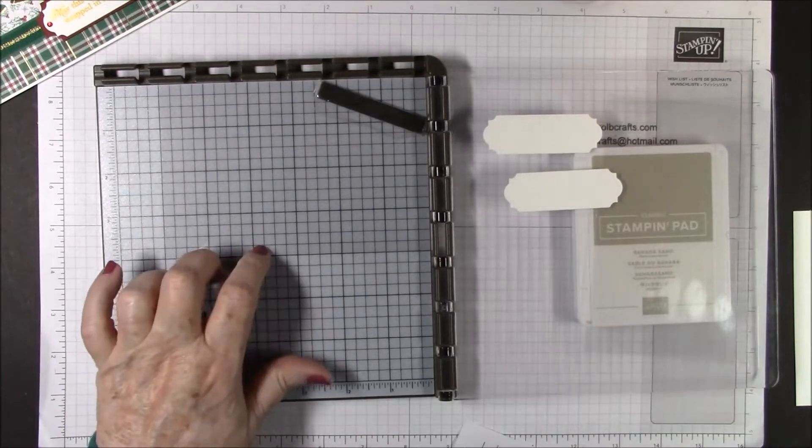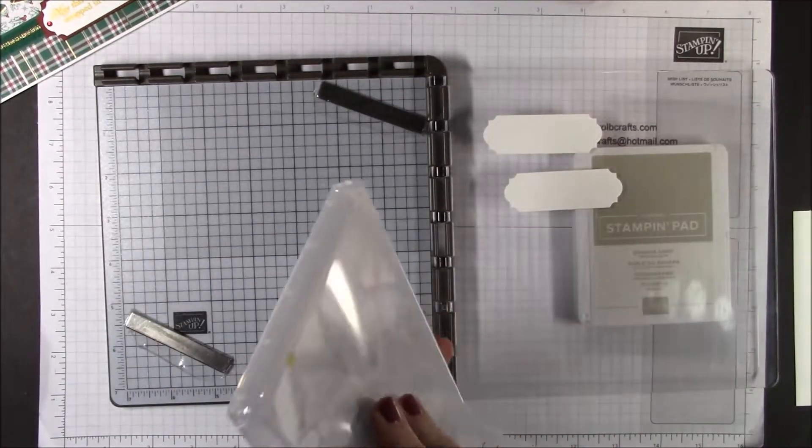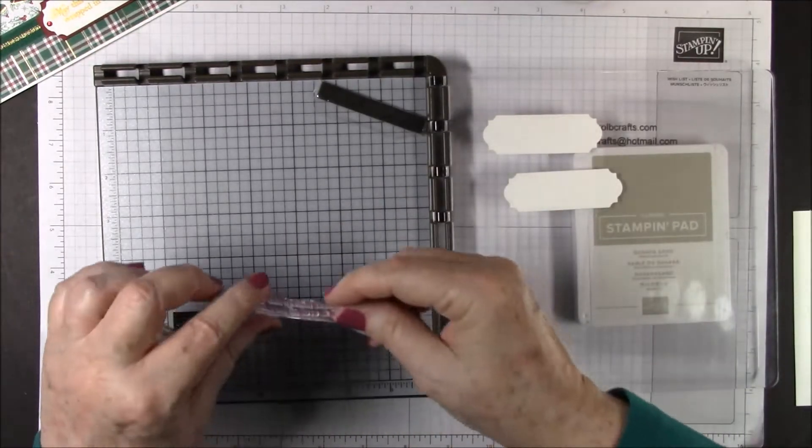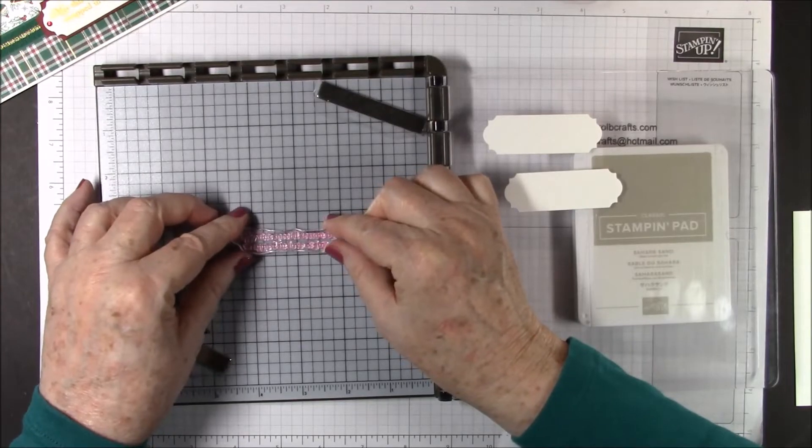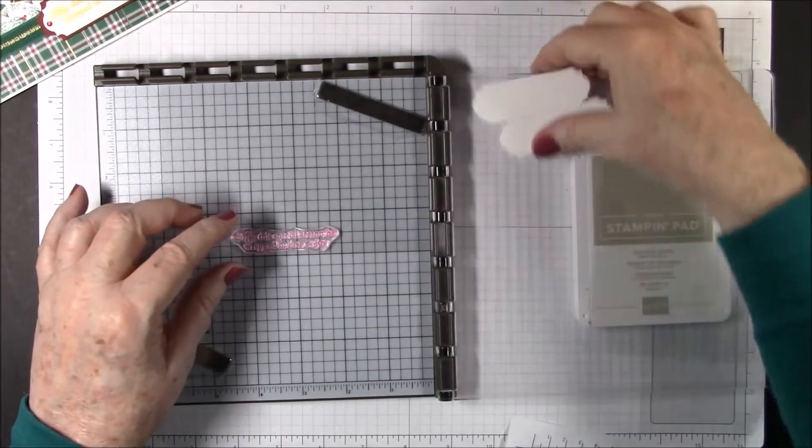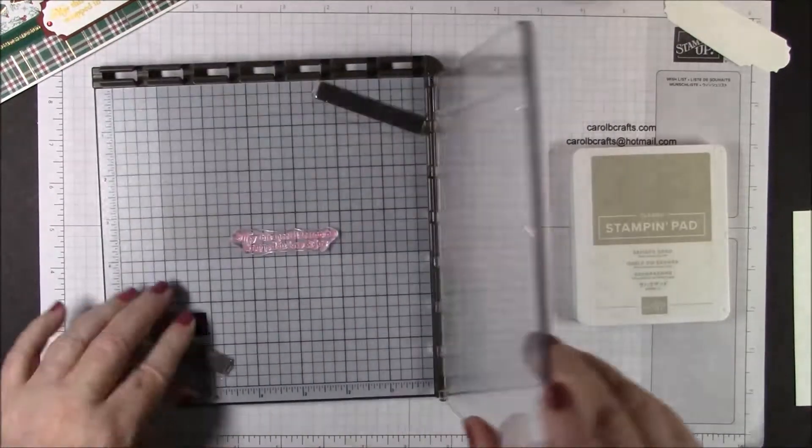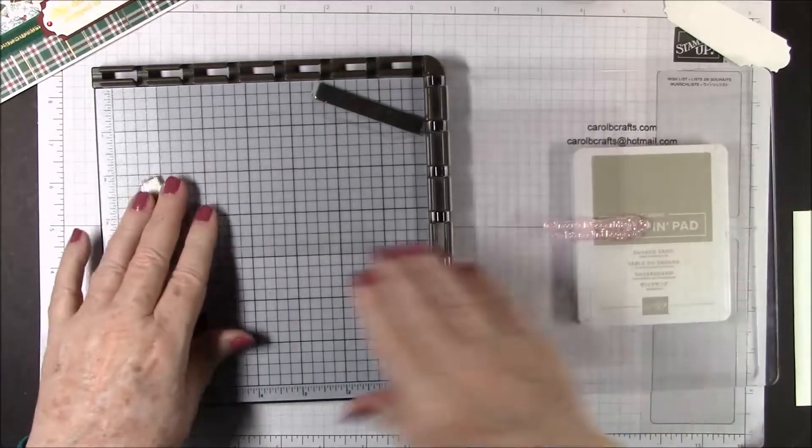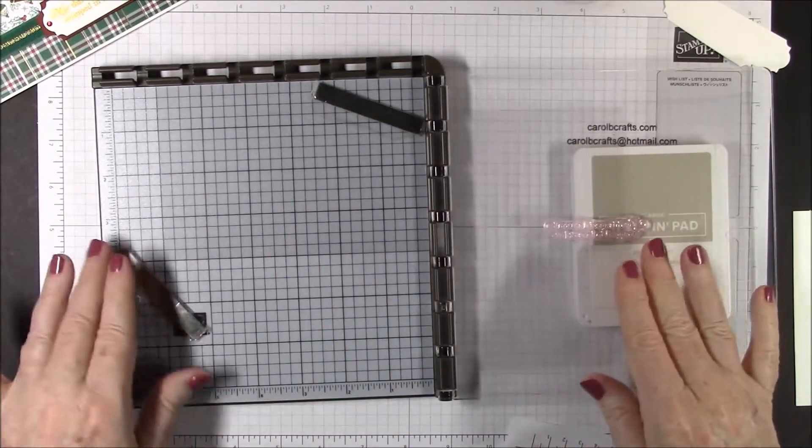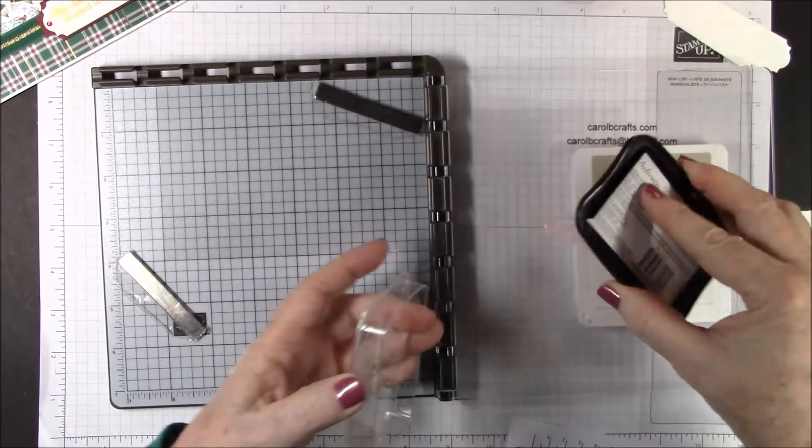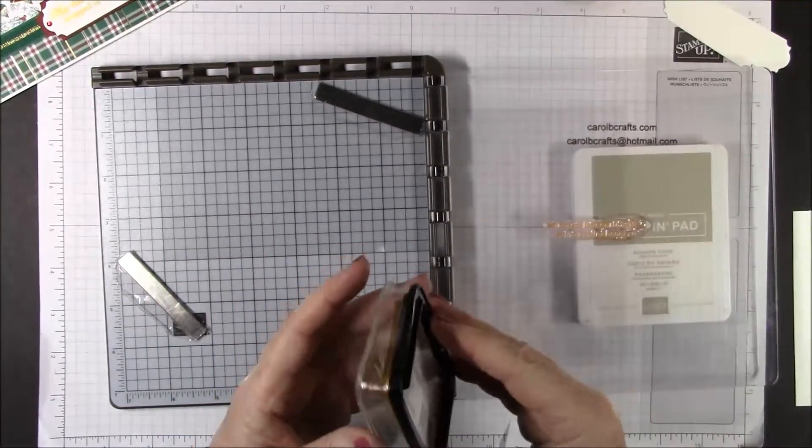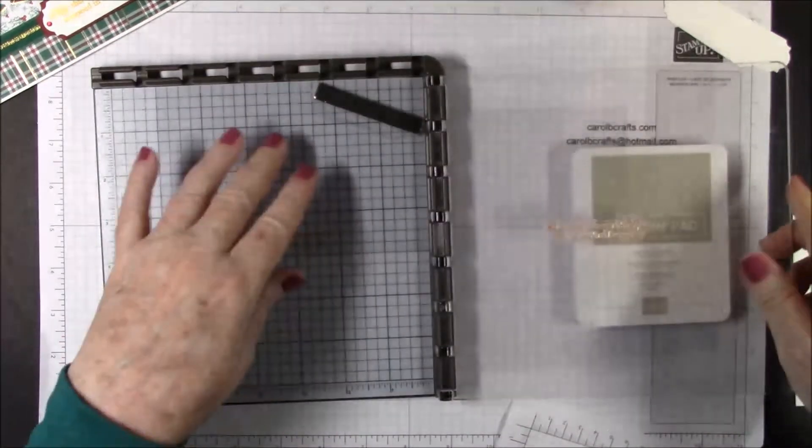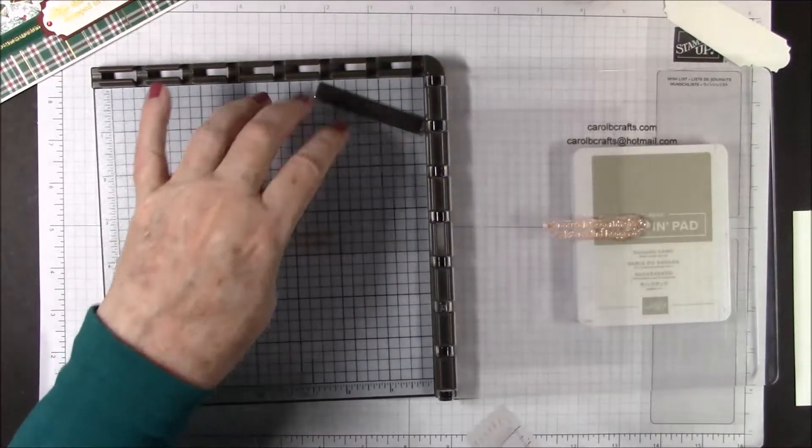We're going to put our four by six window sheet here in the corner and hold it in place. Get our stamp, which will be "may this special season be wrapped in love and joy," and put that down here near the bottom. We're going to ink that up with our delicata golden glitz.